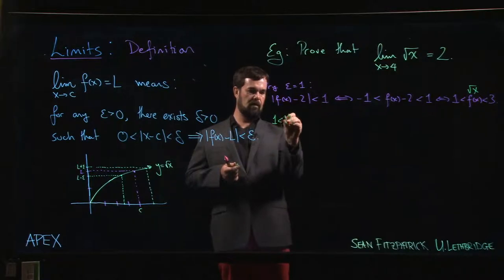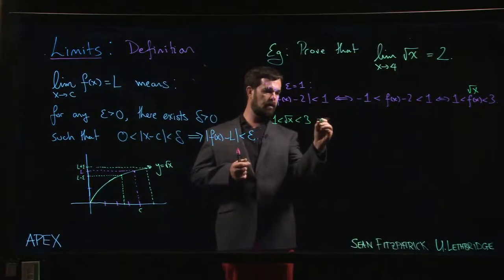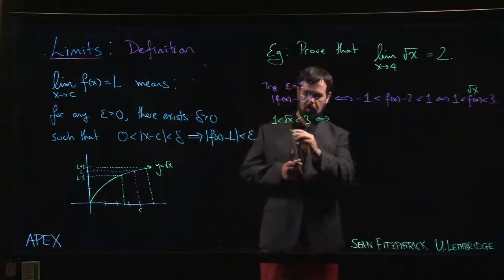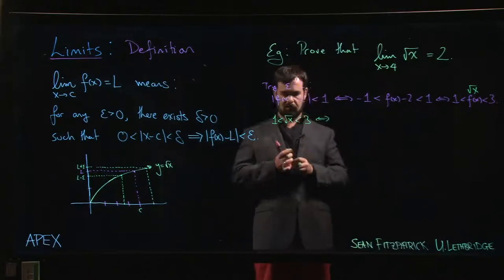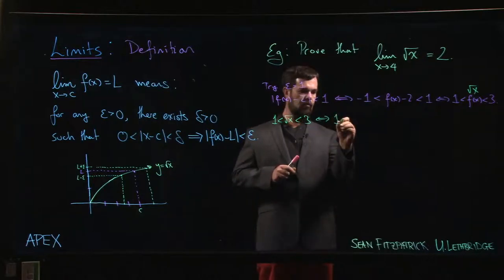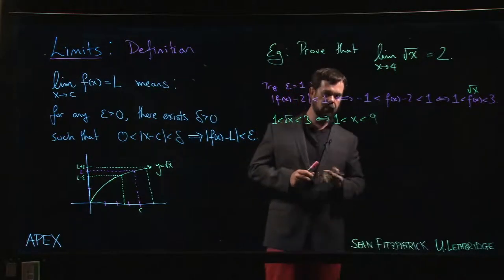Well, everything is positive here, and as long as everything is positive, you're allowed to square inequalities and you'll preserve the inequality. So of course one squared is still one, squaring the square root gets rid of it so we have x, three squared gets me to nine.